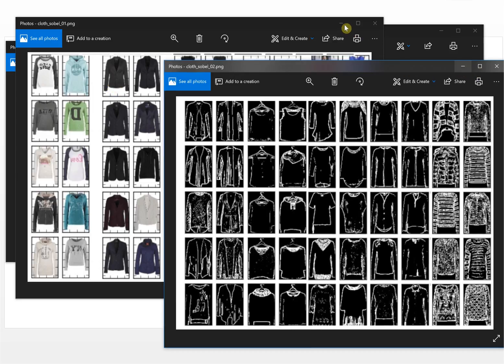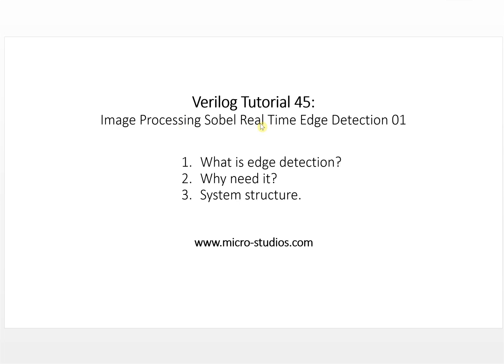So edge detection is very important for image processing. It is usually the first step for computer vision or machine learning.